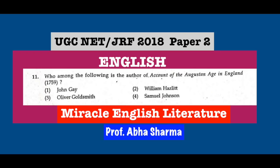Question number 11: Who among the following is the author of An Account of the Augustan Age in England, 1759? The correct answer is Oliver Goldsmith. In this volume on the Augustan Age, he relates it to Queen Anne's rule. The main poet of the Augustan Age is Alexander Pope. He gives complete detail of the Augustan Age, when Roman classics and Roman culture were predominant, and writers were trying to translate all the epics written by Virgil and others of the real Augustan Age of Rome.